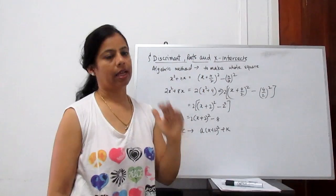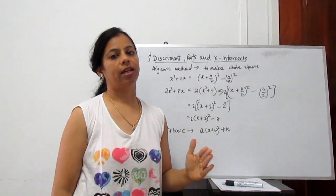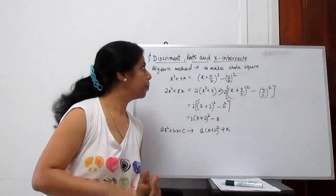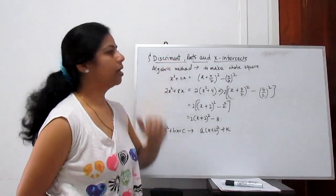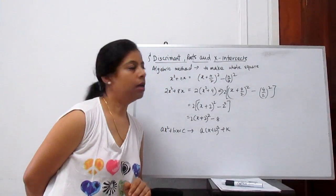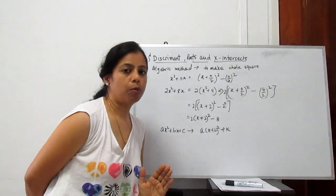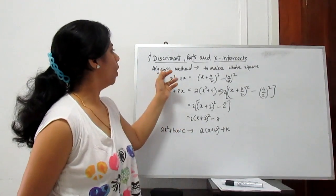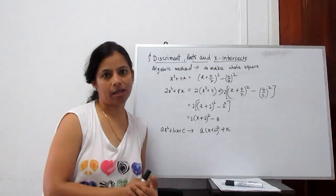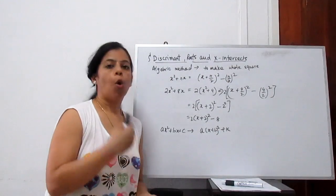Now, the discriminant: roots at the x-intercept means how many times the given curve intersects the x-axis. We start with the discriminant, which I will explain later. But first, we need to know what is the algebraic method. The algebraic method means any quadratic equation we have to convert into a whole square.